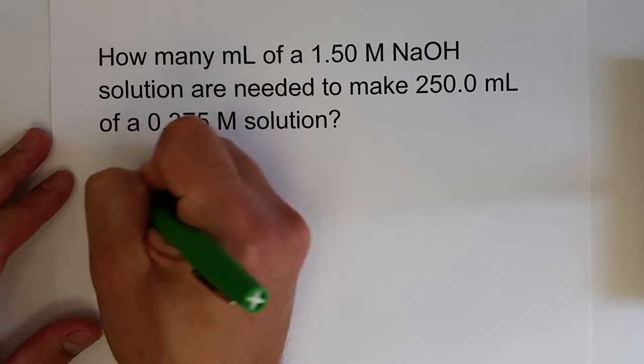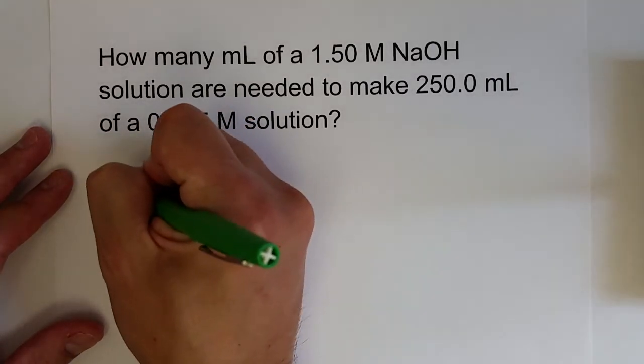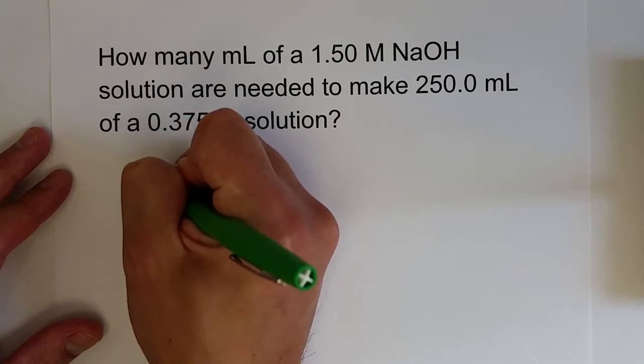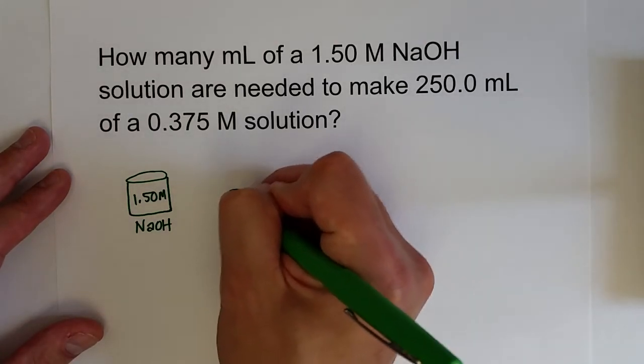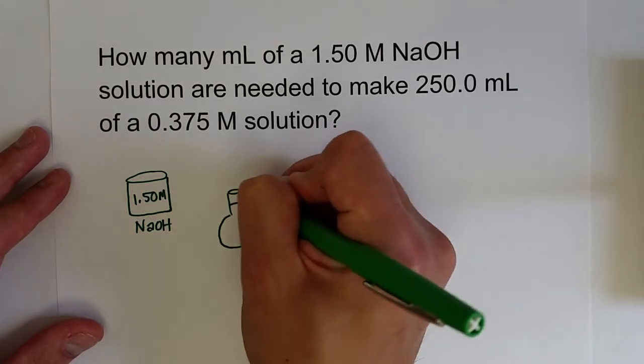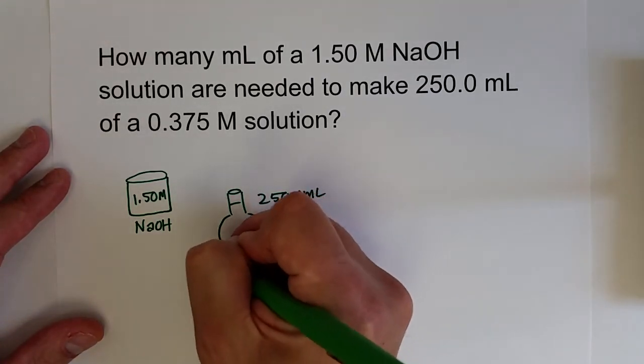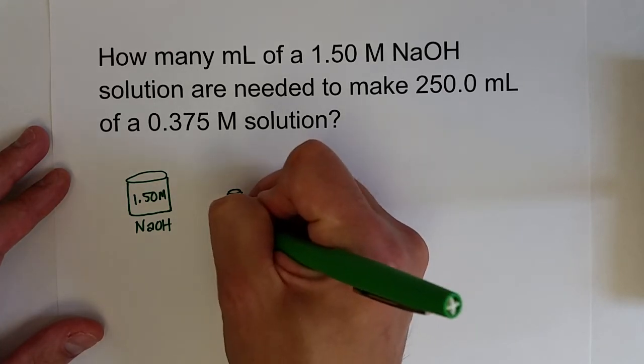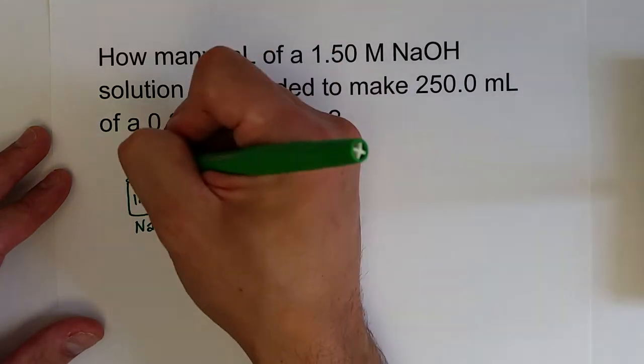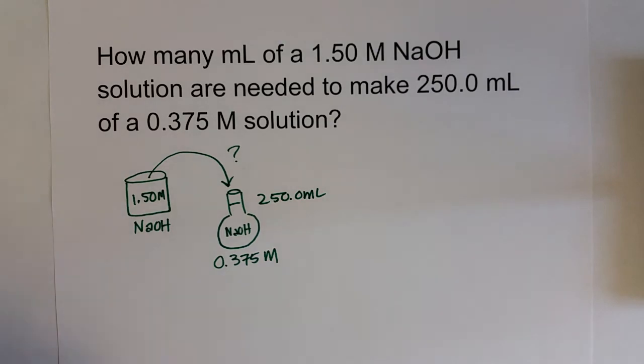If we're looking at this from sort of a diagram view, we're thinking about what we would do in a lab. I've got my 1.50 molar sodium hydroxide solution, I want to make 250 milliliters of a 0.375 molar solution of sodium hydroxide. How much of my stock solution do I need to make this new solution?